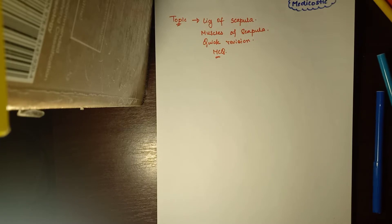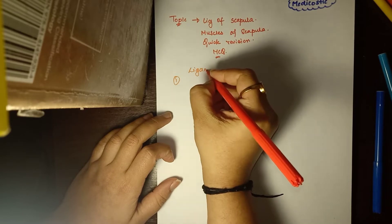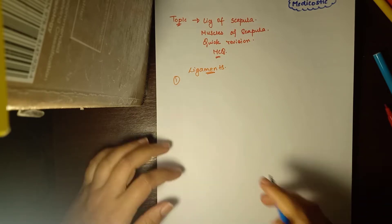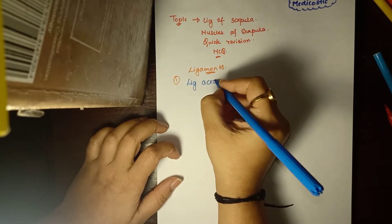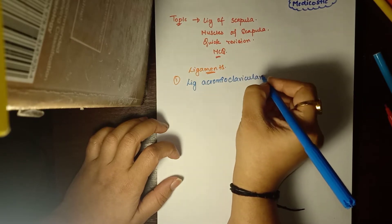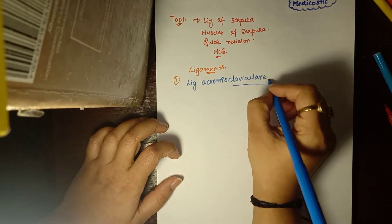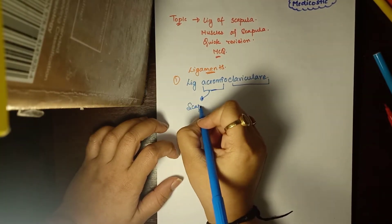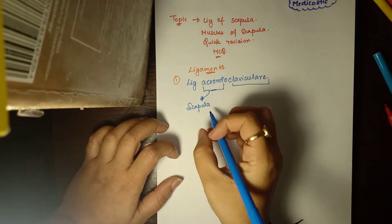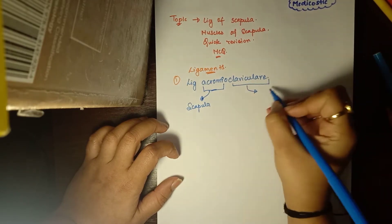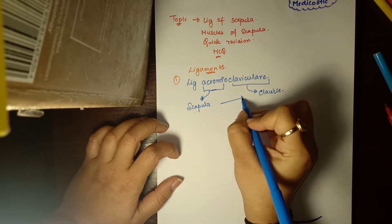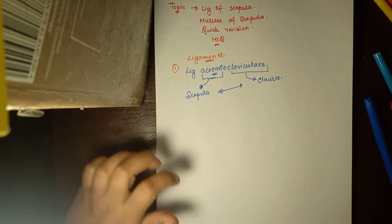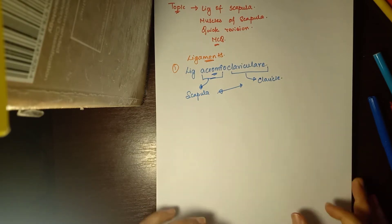Now we will start with today's topic. The first ligament is the acromioclavicular ligament. If we split this name into two parts - acromio and clavicular - acromion is a part of the scapula and clavicular refers to the clavicle. So this ligament joins between the scapula and clavicle at the acromioclavicular joint. I will draw a small diagram so you can easily see where these ligaments are located.